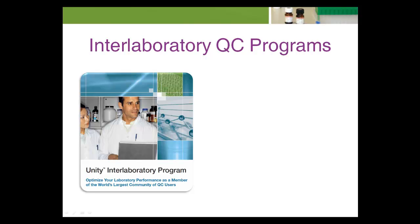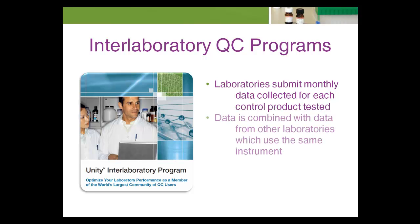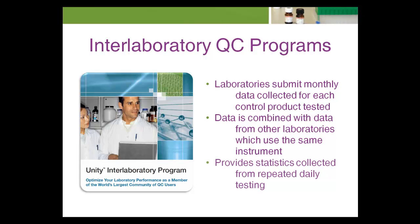In an interlaboratory comparison program, laboratories submit monthly data collected for each control product tested. These data are combined with data from other laboratories which use the same instrument. The benefit of an interlaboratory program over a proficiency program is that it provides statistics collected from repeated daily testing, whereas the proficiency program provides statistics collected from single events that occur only three times a year in the United States, and somewhat more frequently in other countries.